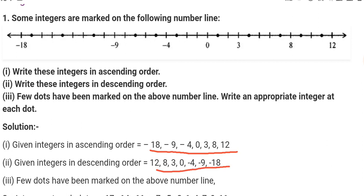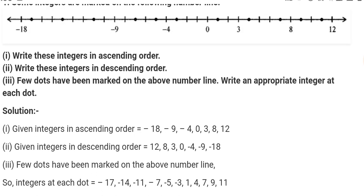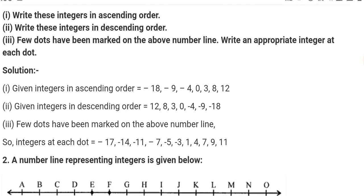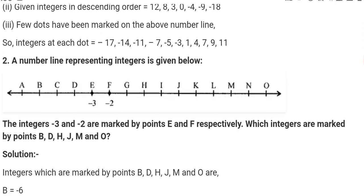Next, few dots have been marked on the above number line. Write an appropriate integer at each dot. So you can see that zero, then here will be one, two, three, here will be four, then five, six, this is seven, eight, then nine, ten, then eleven. And here zero, minus one, minus two, there is minus three, then minus four, minus five, minus six, minus seven, minus eight, minus nine, minus ten, minus eleven, minus twelve, minus thirteen, minus fourteen, minus fifteen, minus sixteen, minus seventeen here.